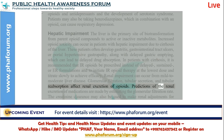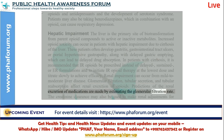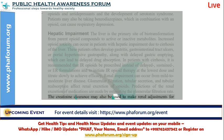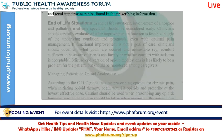Predictions of the renal excretion of medications are made by estimating the glomerular filtration rate. The creatinine clearance may also be used to make renal adjustments for medications. Information on the use of specific opioids in patients with hepatic and renal impairment can be found in the prescribing information.